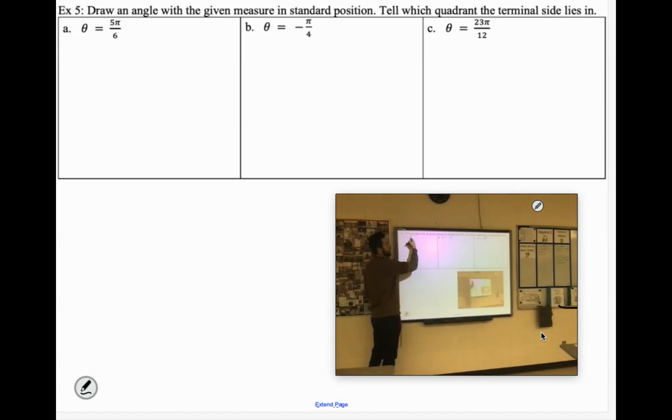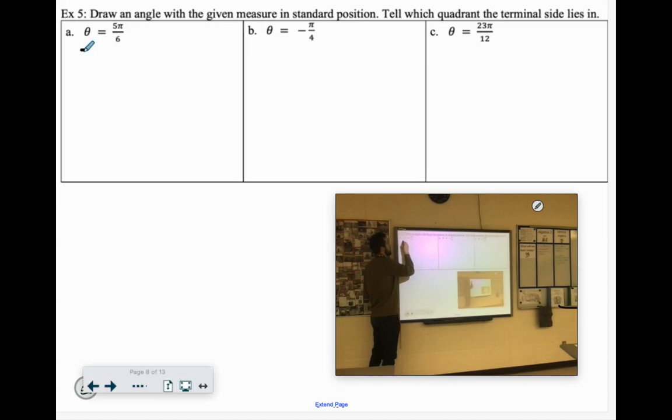So we need to figure out what portion of that 180 degrees we have. So we're just going to take like 5π over 6. We're just going to do 5 sixths of 180 degrees. And then we'll be able to figure out the measure. Now you can do that in your calculator or you can simplify.